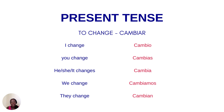So as you notice, the only verb that changes — or the conjugation that changes — is the third person: he, she, it. And as you can see, there's an S at the end, and that's the only one that changes in the present tense. So: I change, you change, he/she/it changes, we change, and they change.